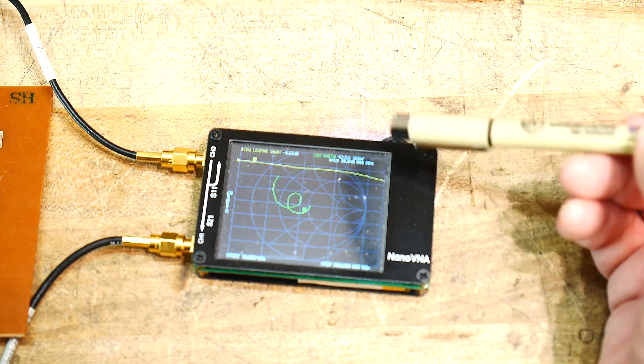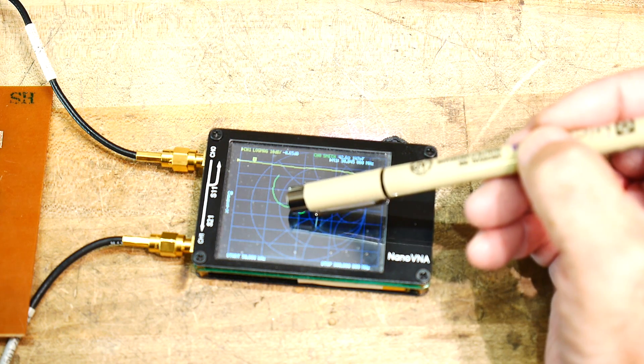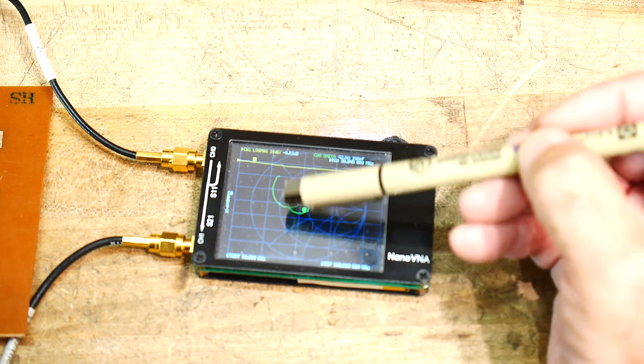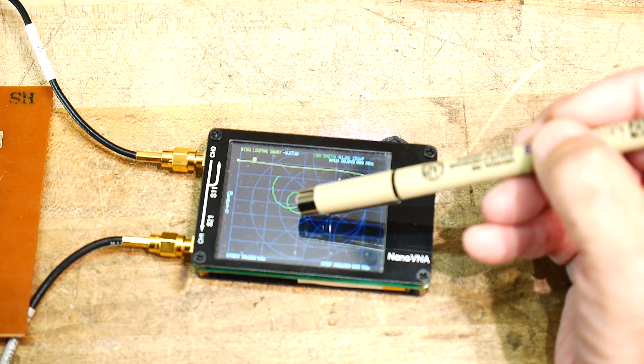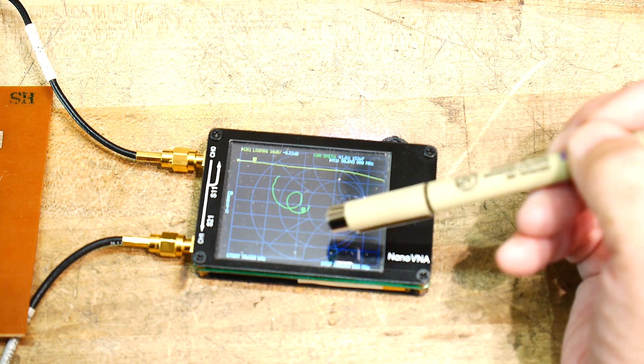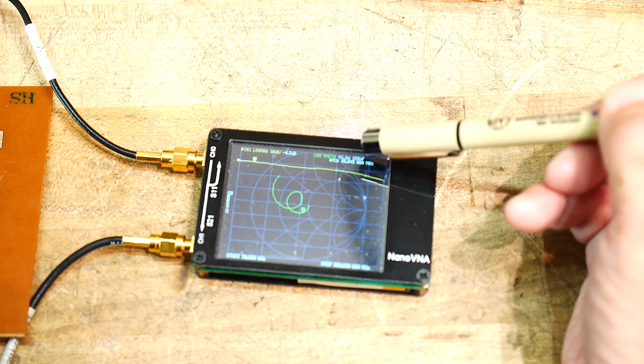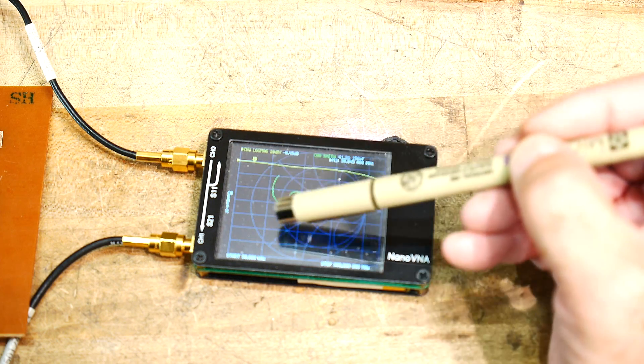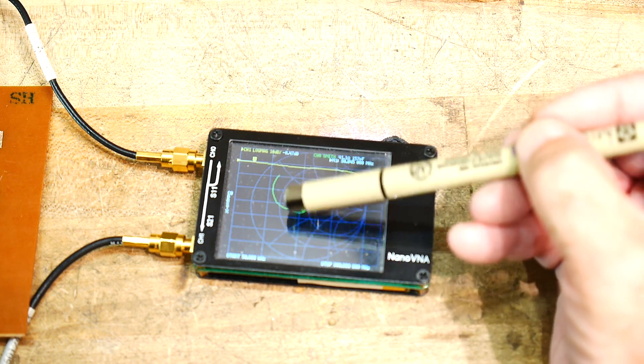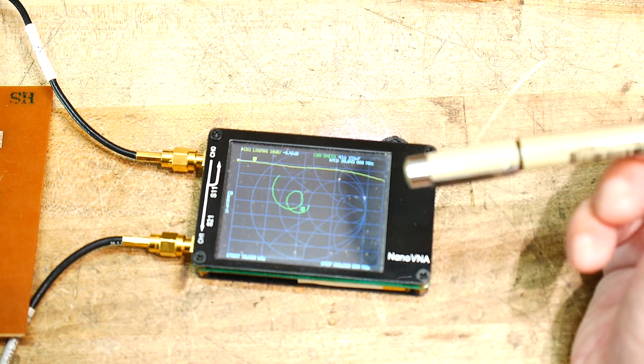So we have two traces. We have the Smith chart to show if it's 50 ohms or not, and it's kind of circling around 50 ohms here at 90 MHz, so it spirals off at higher frequencies. But lower frequencies, it's staying okay.